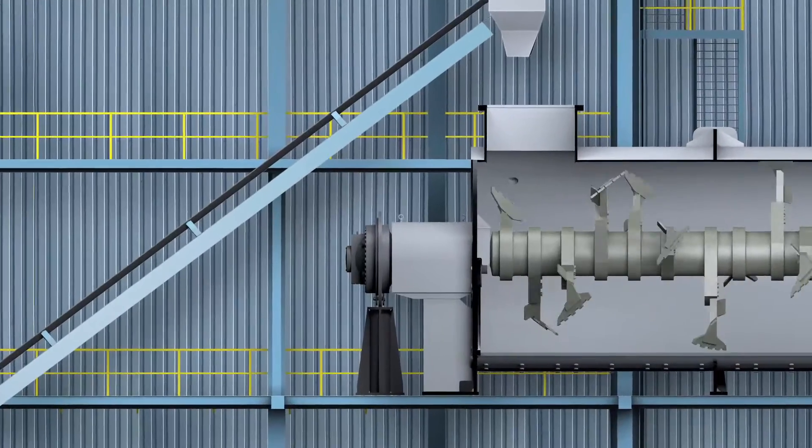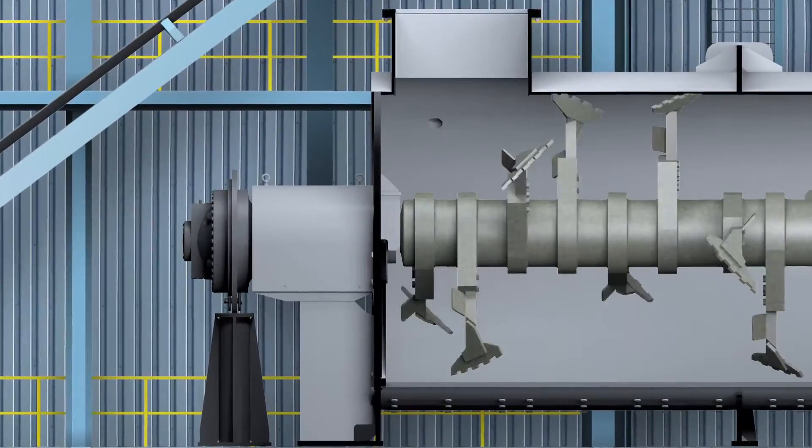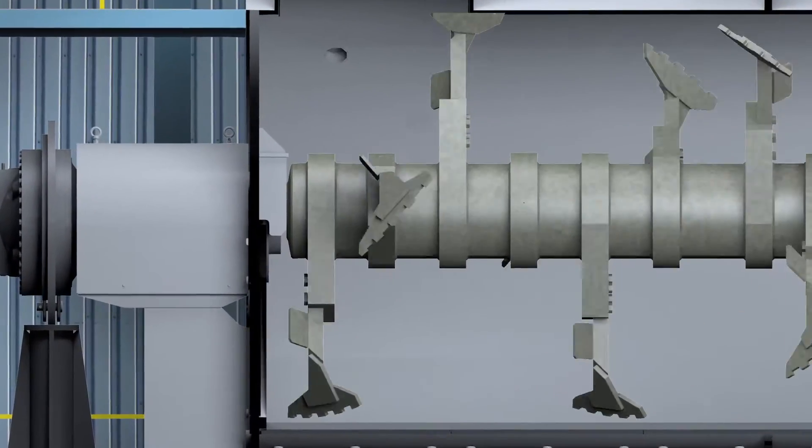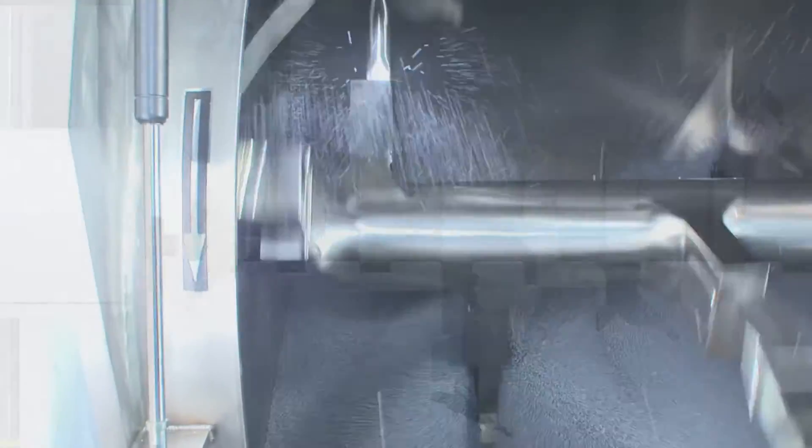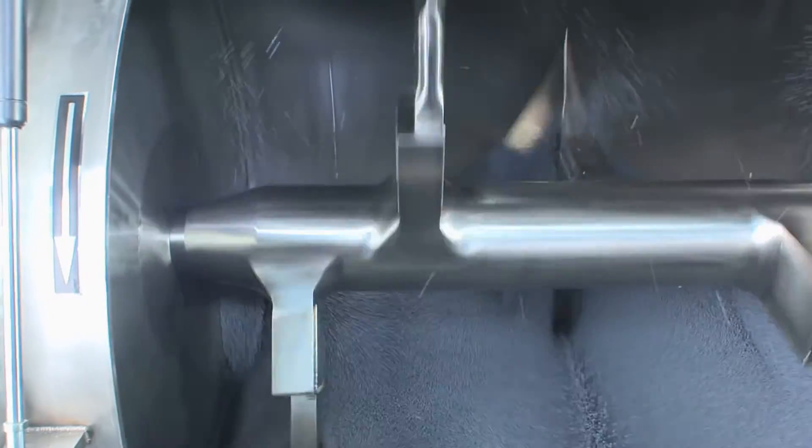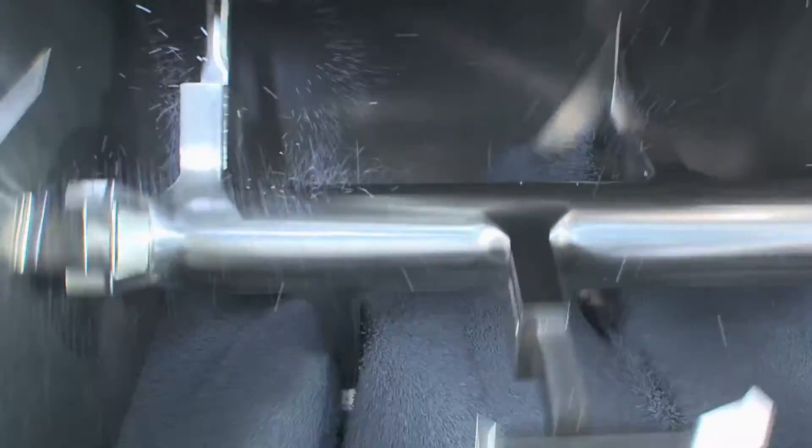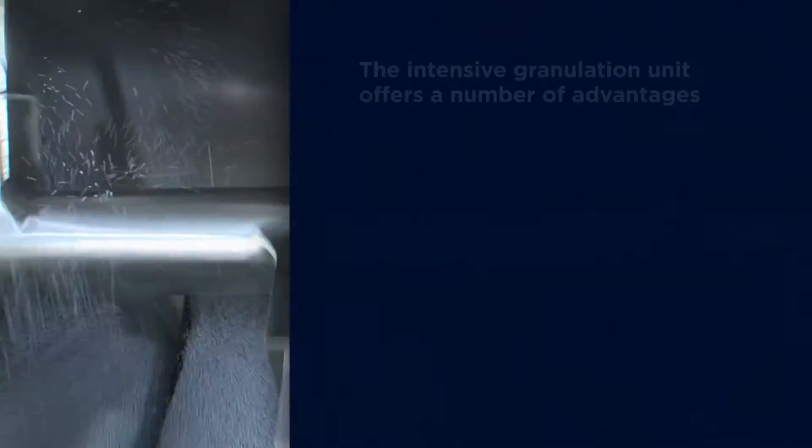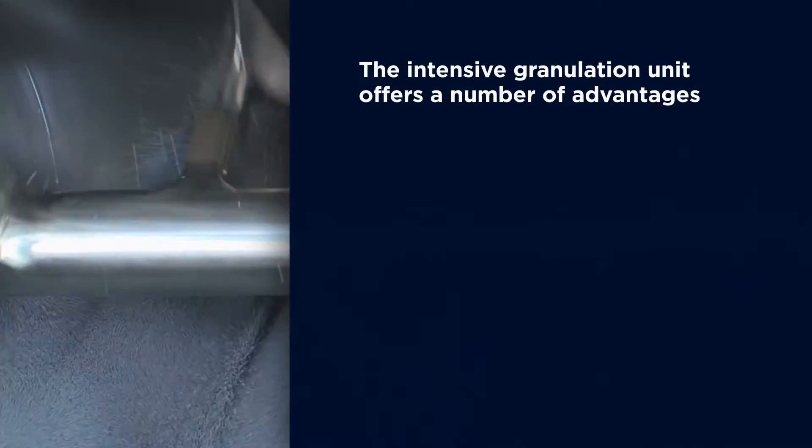Following mixing, the sinter raw mix is charged to the granulator unit where granulation to the required grain size is carried out to ensure optimum permeability of the sinter bed. The Intensive Granulation unit offers a number of advantages compared to a standard drum type granulator.